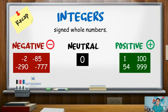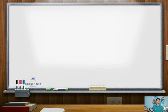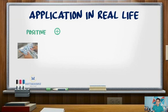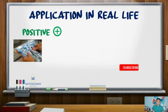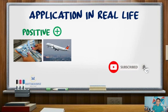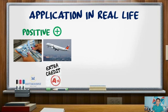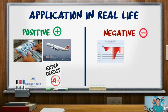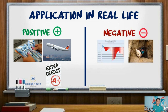For positive integers, some real-life applications may involve profit, distance above the ground, and added points, among others. For negative integers, we have deficit, below the ground, and deducted points.